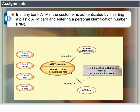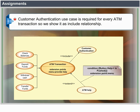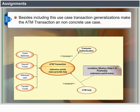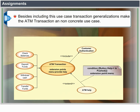In many bank ATMs, the customer is authenticated by inserting a plastic ATM card and entering a personal identification number. Customer authentication use case is required for every ATM transaction, so we show it as an include relationship. Besides including this use case, transaction generalizations make the ATM transaction a non-concrete use case.